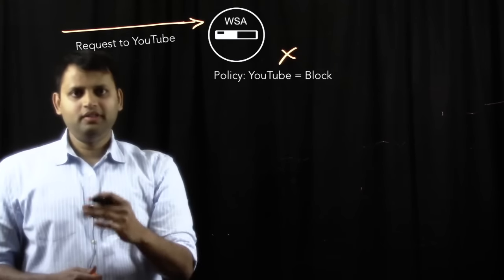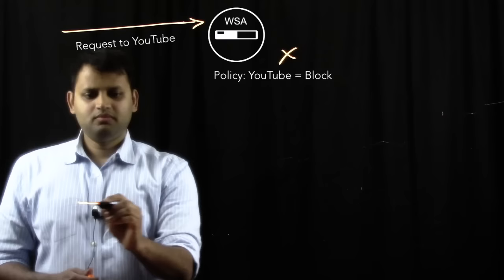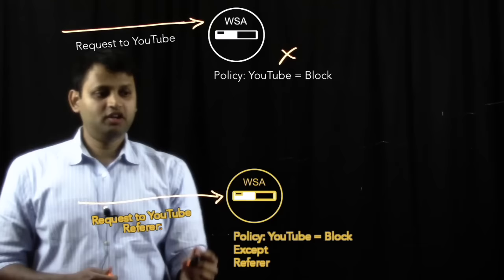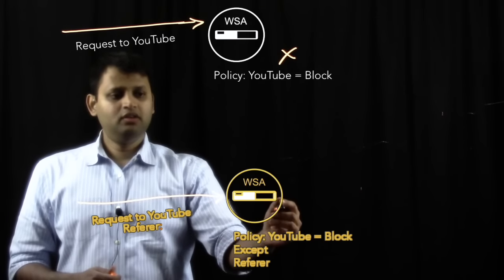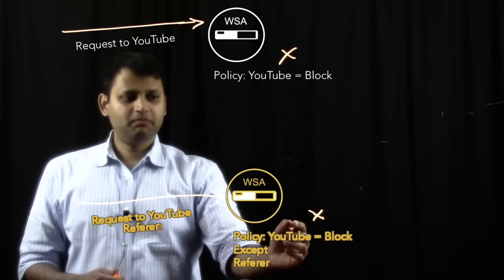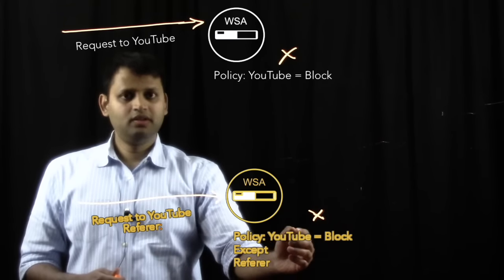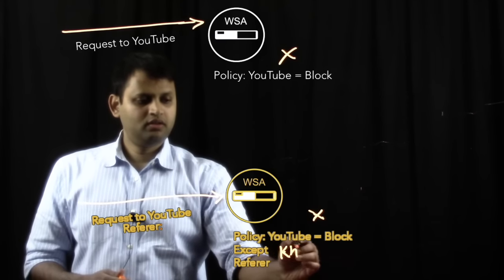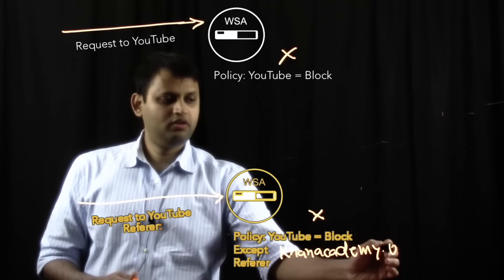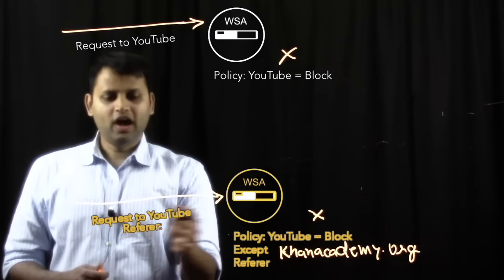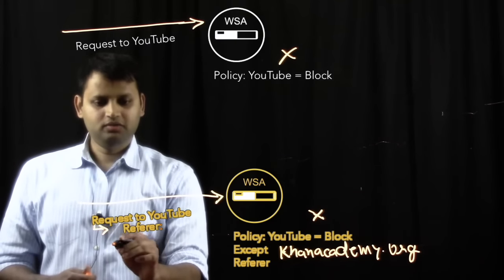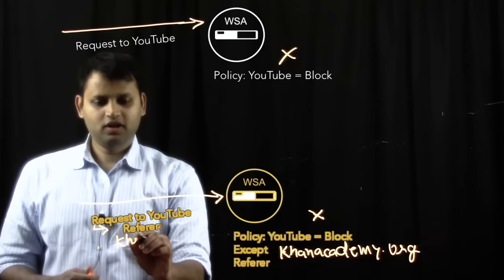Now, that's the before. The after is: there's this request coming to YouTube.com, but it is coming from Khanacademy.com. You have your same WSA, with the same global policy set to block YouTube, except when the referrer is Khanacademy.org. So you have your YouTube video, but now it will have the referrer header in it for Khanacademy.